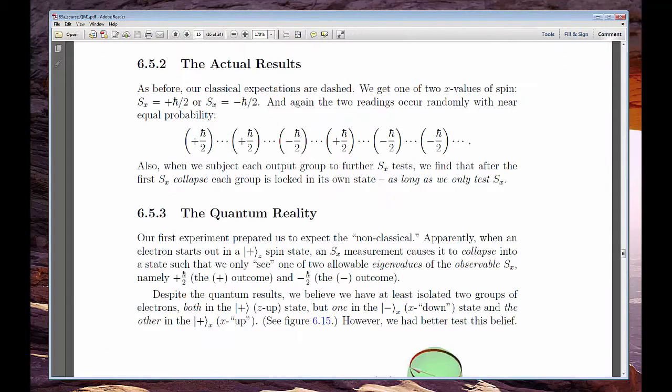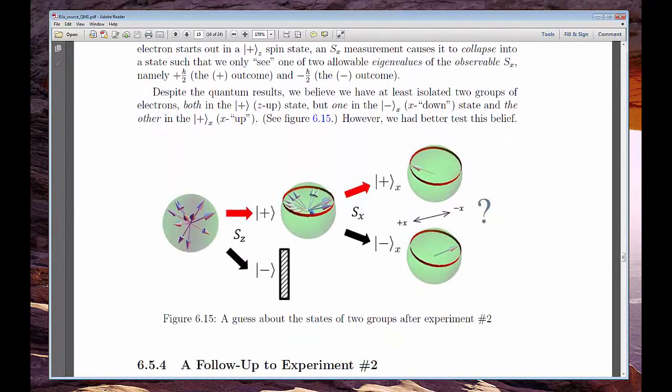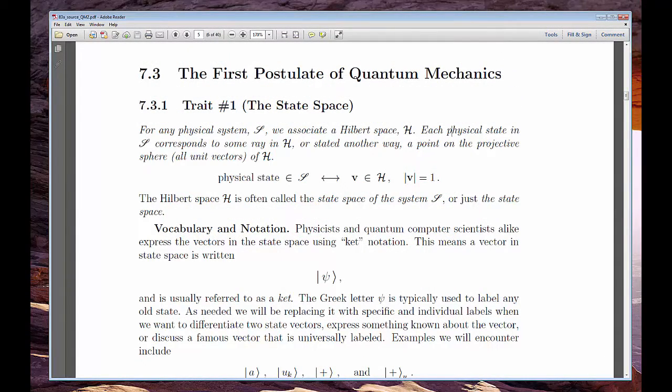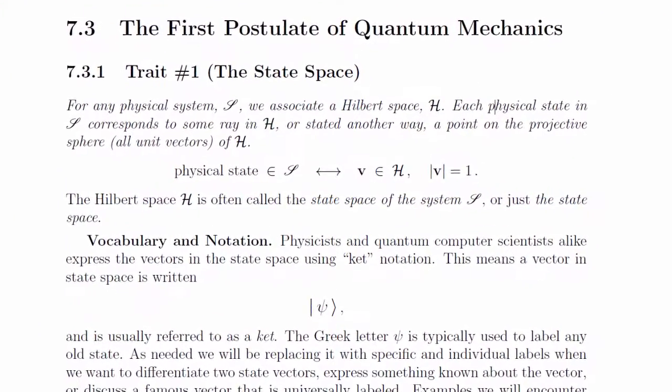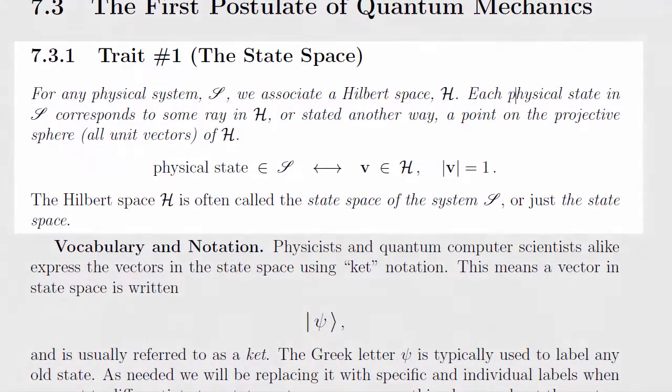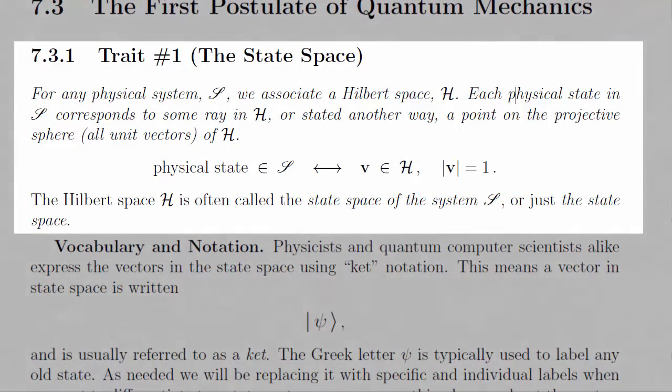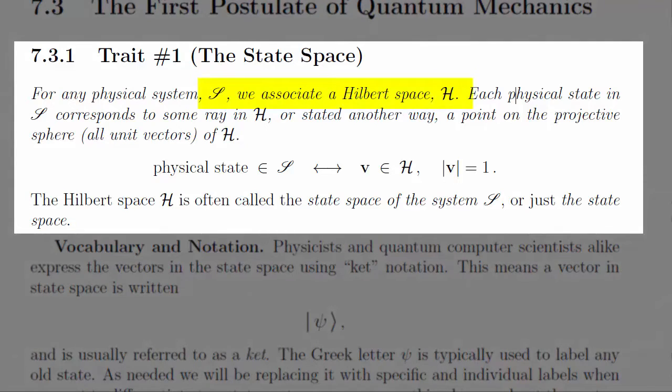Quantum mechanics is based on a few assumptions called postulates. You cannot prove them. They're the result of a century of testing and retesting. So far, no experiment has contradicted these assumptions. The first postulate is the great gift that physicists have given us computer scientists and mathematicians. It tells us that we can do all of our work with pen and paper in some Hilbert space. We don't need a lab. We don't need any apparatus. We don't even need physicists. We just need to know what the state space is.